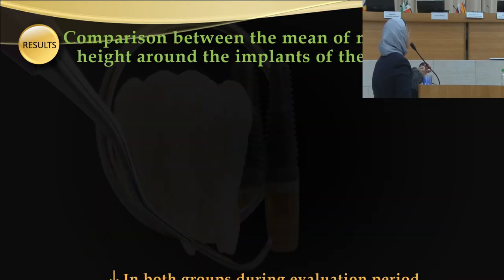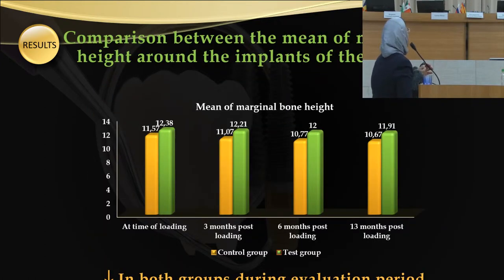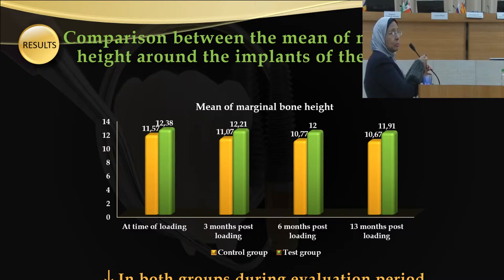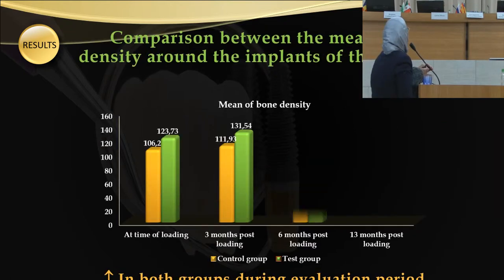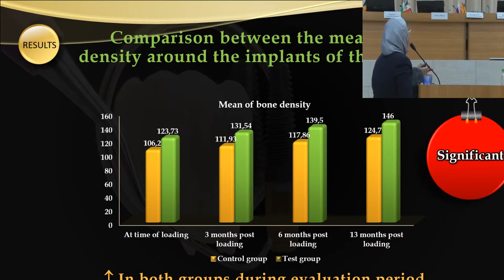Radiographic results: comparing the mean marginal bone height around implants of the two groups, this graph shows a decrease in both groups during the evaluation period, but the test group showed significantly higher values than the control group. In comparison of mean bone density around the implants, there was an increase in both groups during the evaluation period, and the test group showed a highly significant difference compared to the control group.